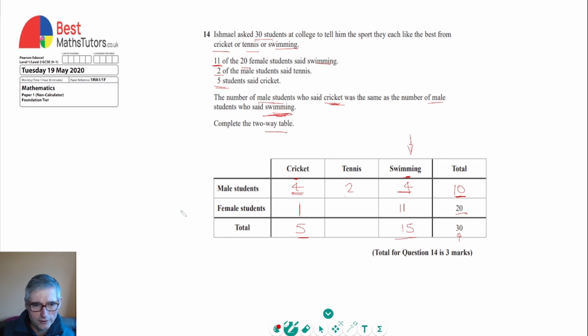And then if we look at the row for female students, we've got 20 female students in total. But if only one likes cricket and 11 like swimming, together they make 12, so we need eight more. So that means eight like tennis. And then we can fill in the tennis column now because we've only got one missing on that, and we can just add the two and the eight together and that makes 10. That's the total for the tennis.